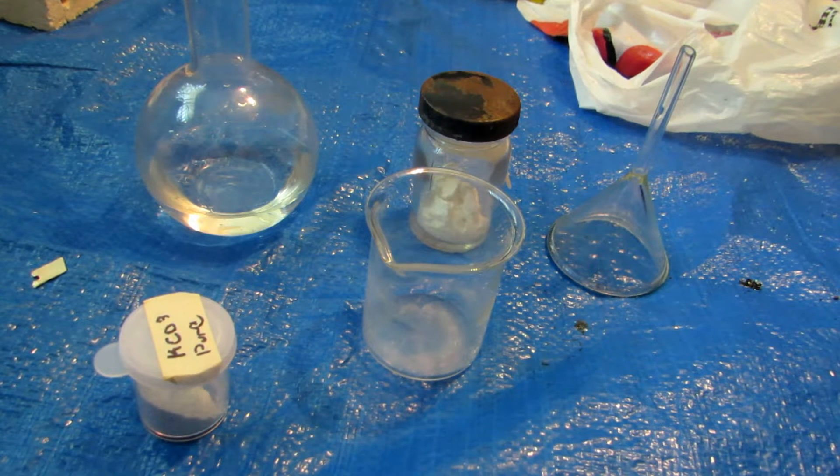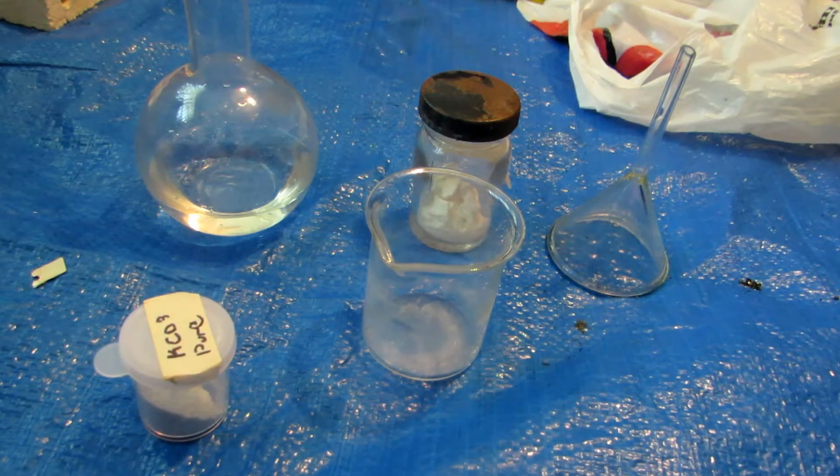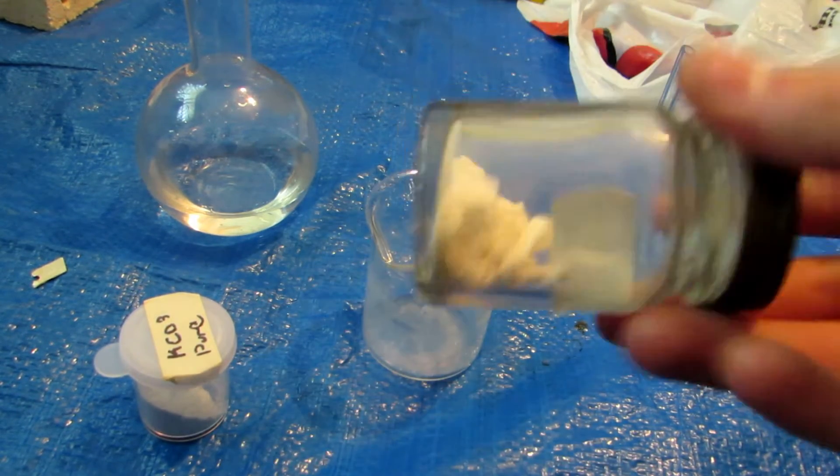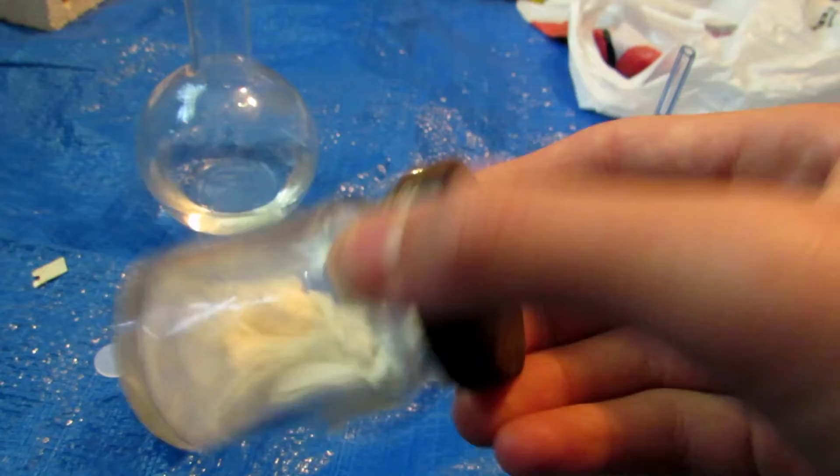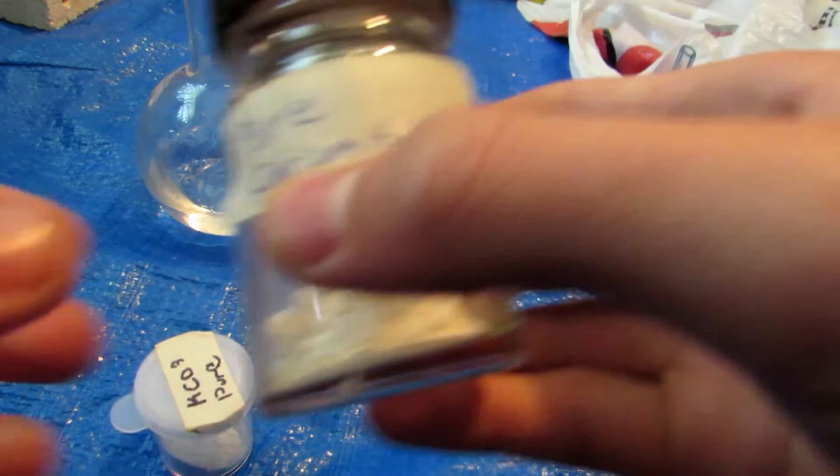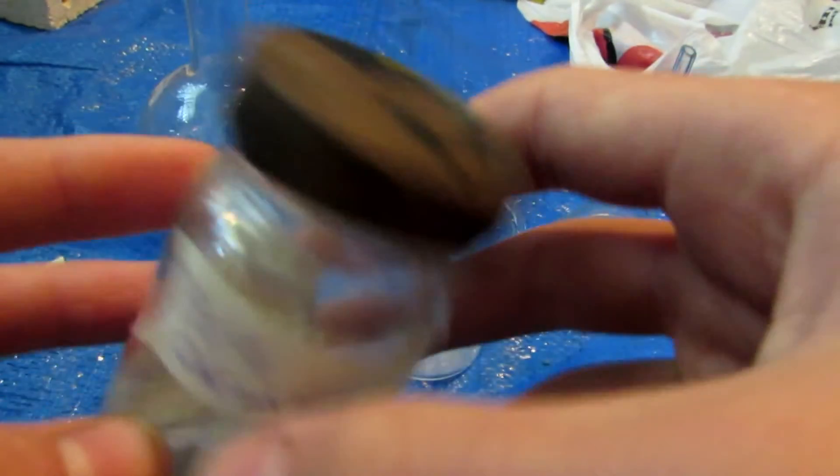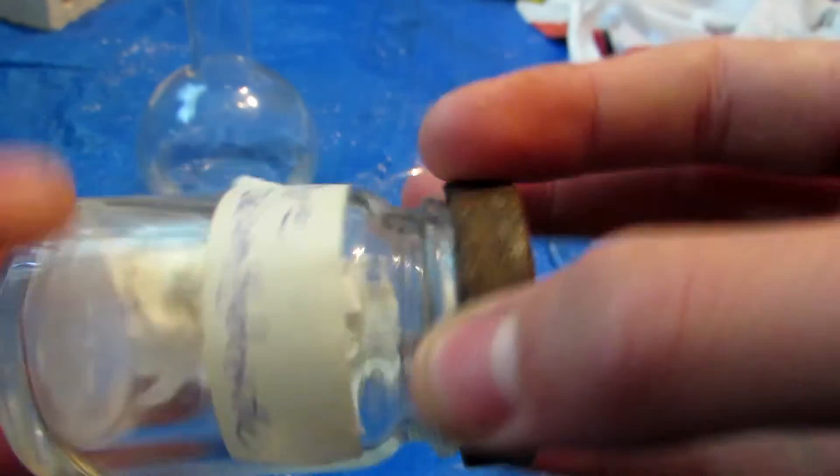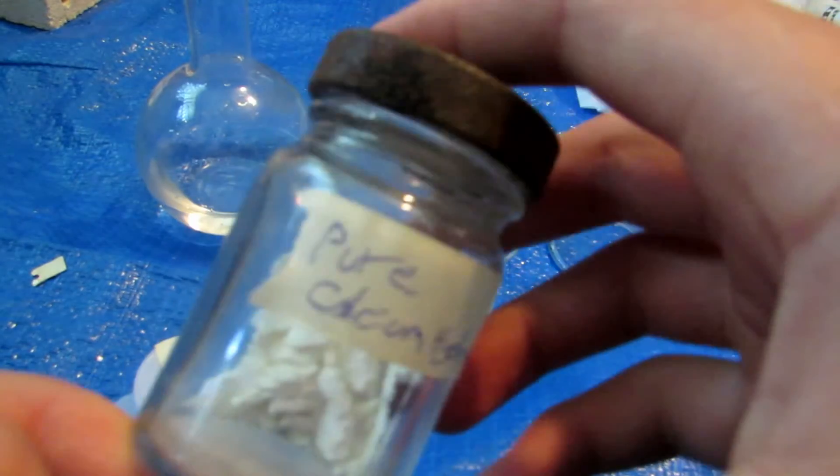Now it's fairly simple to make potassium hydroxide using a simple displacement reaction. So we're only going to need two chemicals, potassium carbonate and this nice calcium hydroxide.